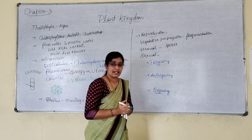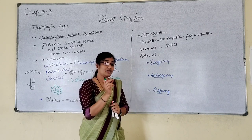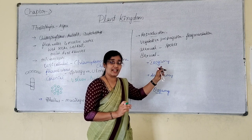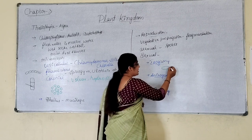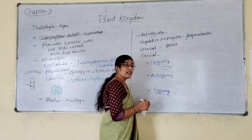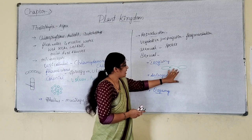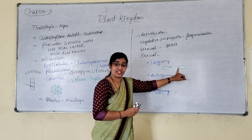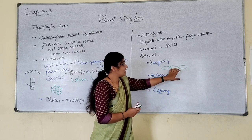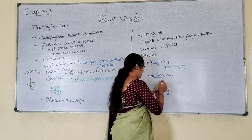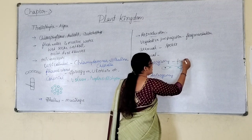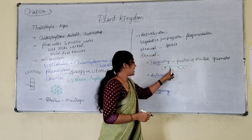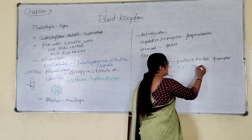In isogamy, the fusion of male and female gametes takes place, but the fusion of similar types of gametes occurs. Here both male and female gametes are similar in terms of size, morphology, and structure. Both are similar in shape and size, and both possess flagella — a thread-like structure which helps in the movement of spores or gametes. When the fusion of similar gametes takes place, that type of sexual reproduction is called isogamy.